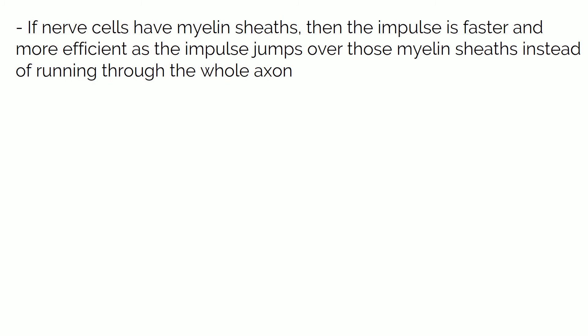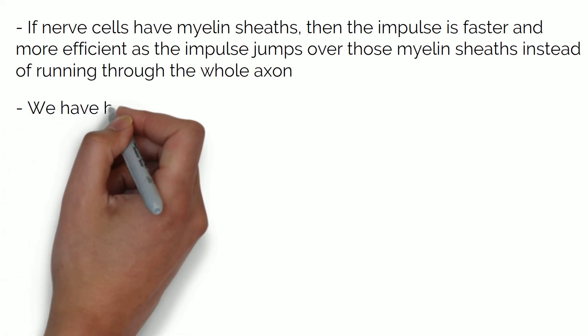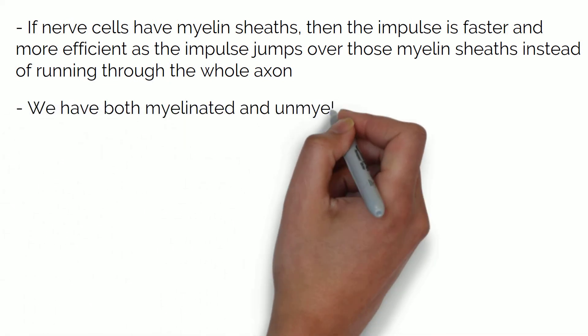This way, that depolarization that occurs for the impulse to be generated only needs to occur a handful of times in each neuron instead of on the whole length of its axon. If you think of an obstacle course where you have a pit of mud every meter, you can imagine how it would be much faster to just jump over the mud to get to the other side of the course instead of going into the mud and then coming out of it until you reach the end. But we have both types of nerve cells in our body; they just have different functions.